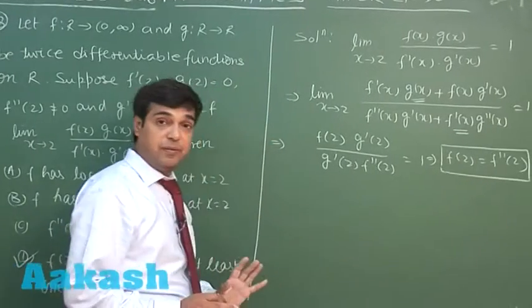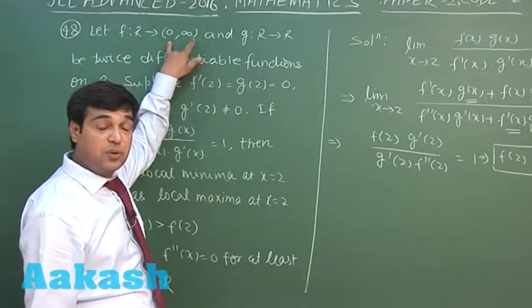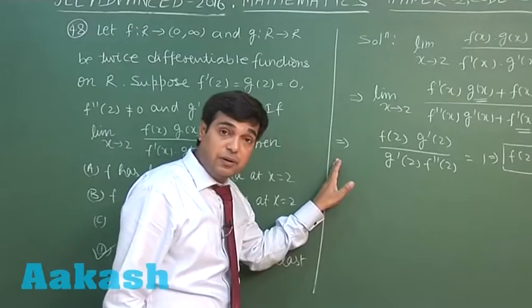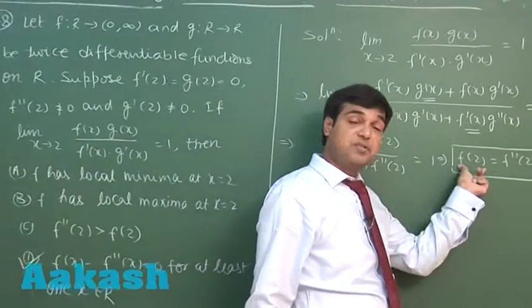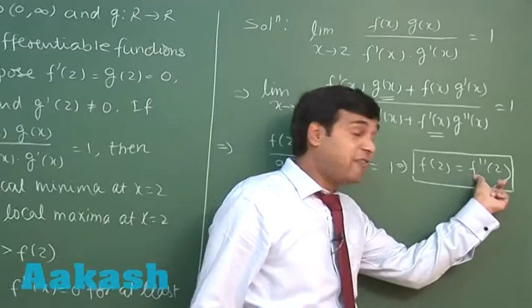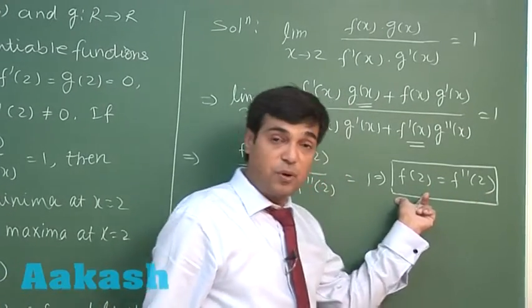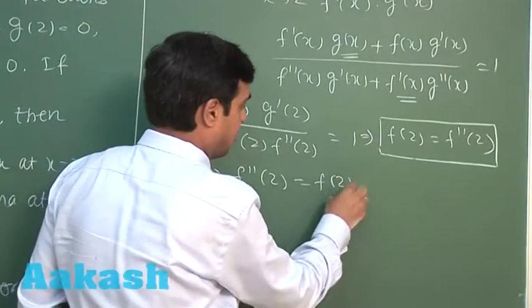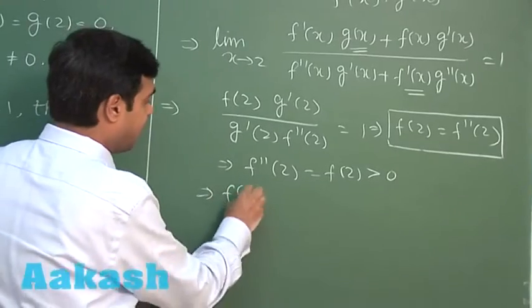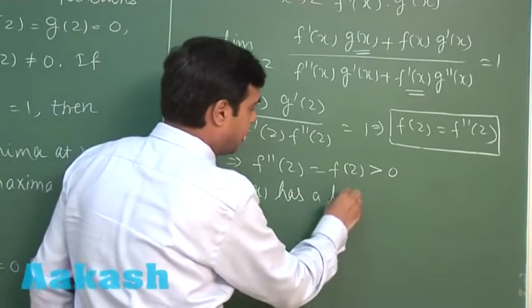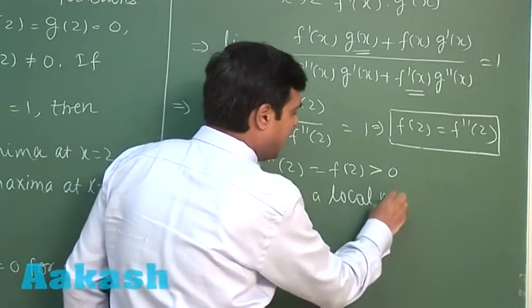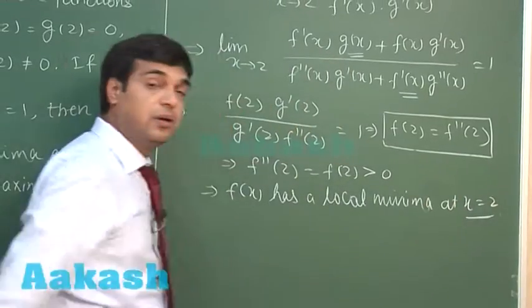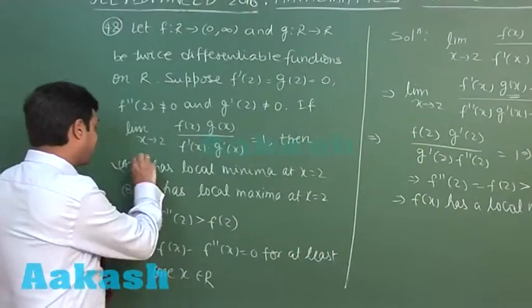We have to talk about maxima minima at 2. Since the function f has range 0 to infinity, so clearly we can say that f(x) is positive. f(x) is positive means f(2) is a positive number, means f double dash 2 which is equal to f(2), it is also a positive number. Meaning that f(x) has a local minima at x is equal to 2. So this option A is correct.